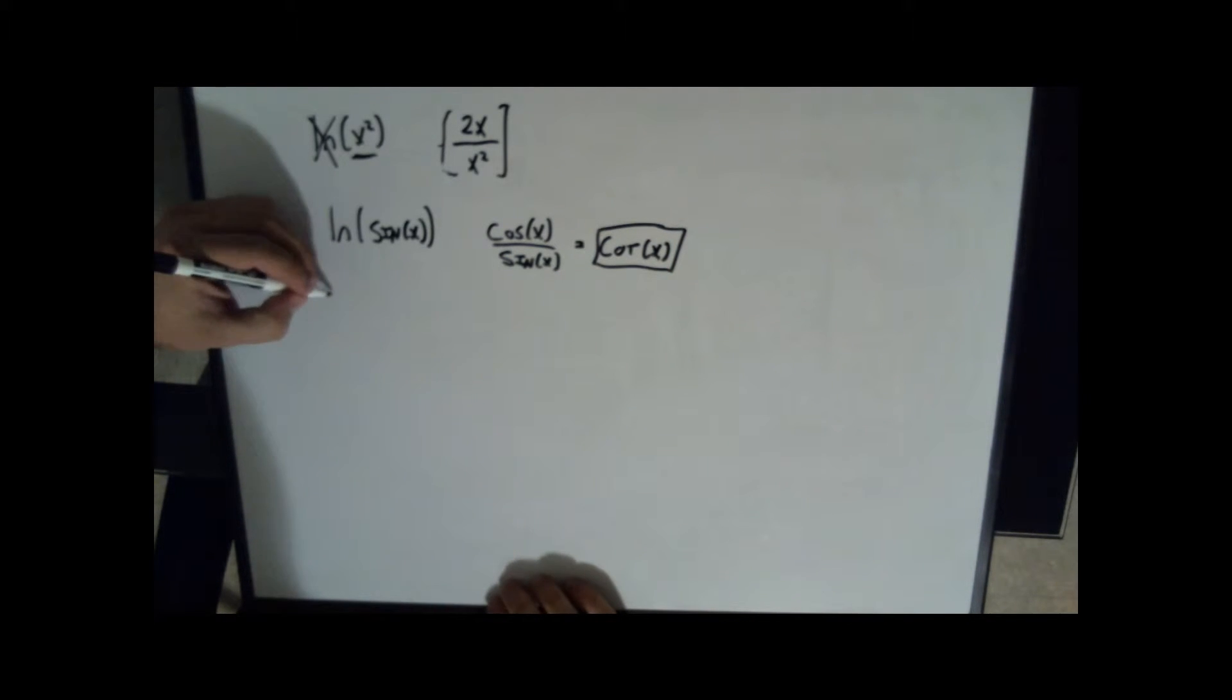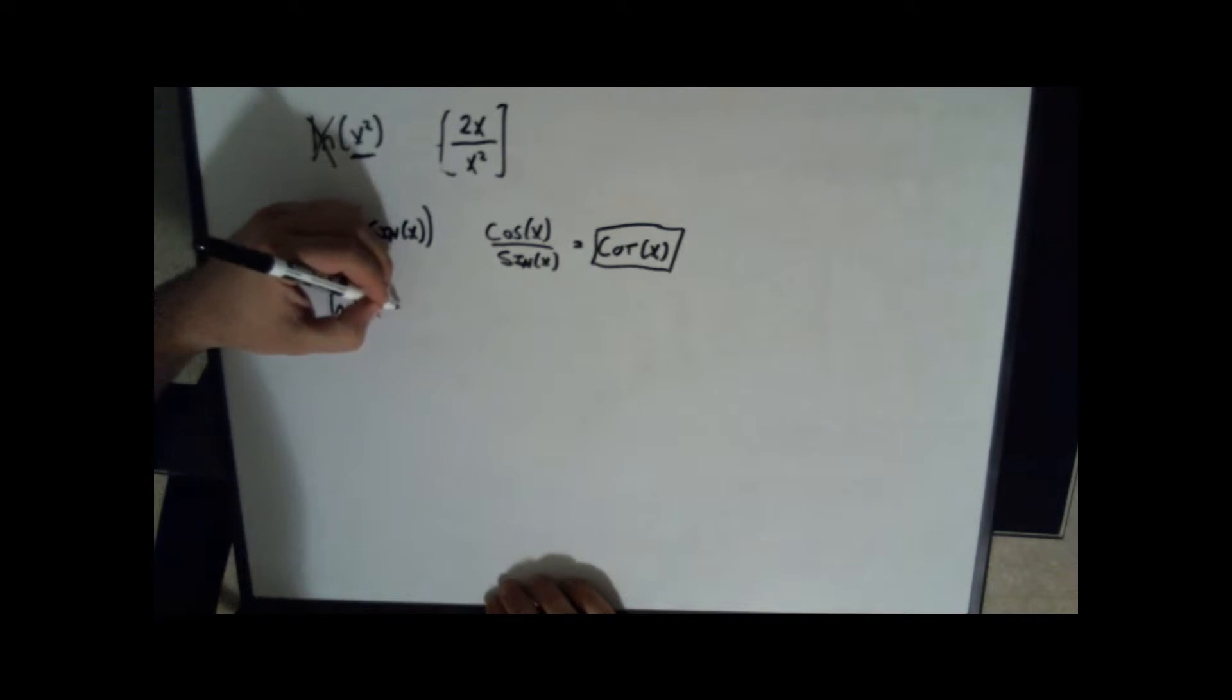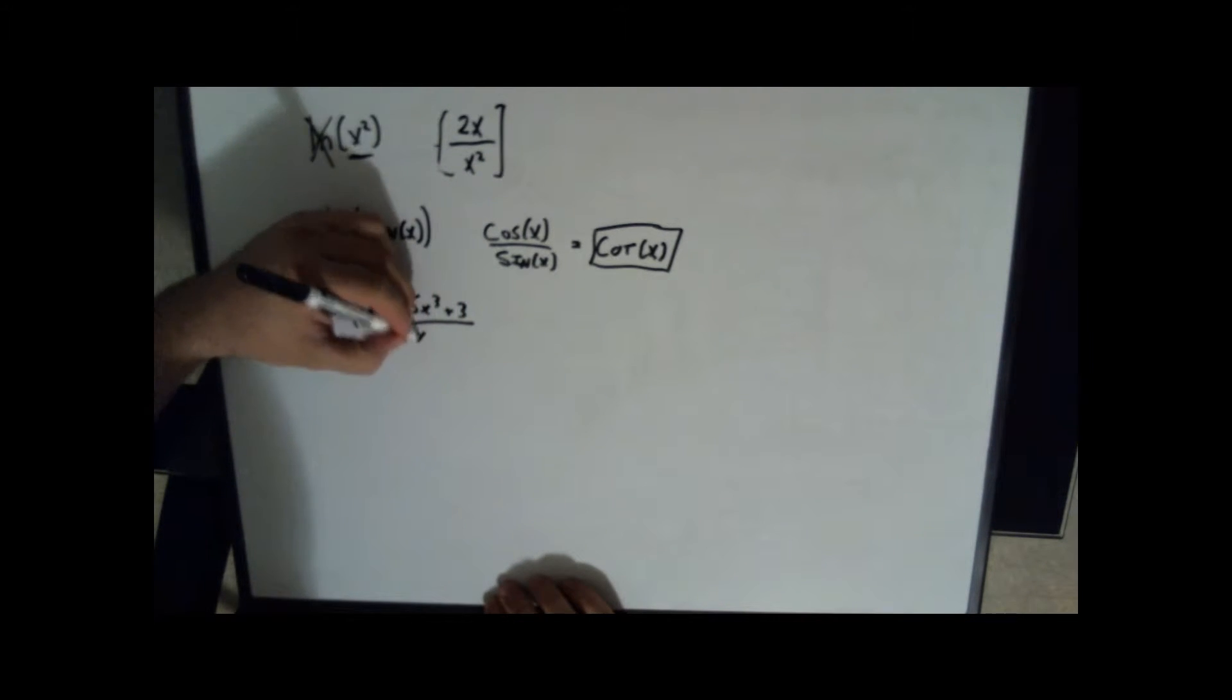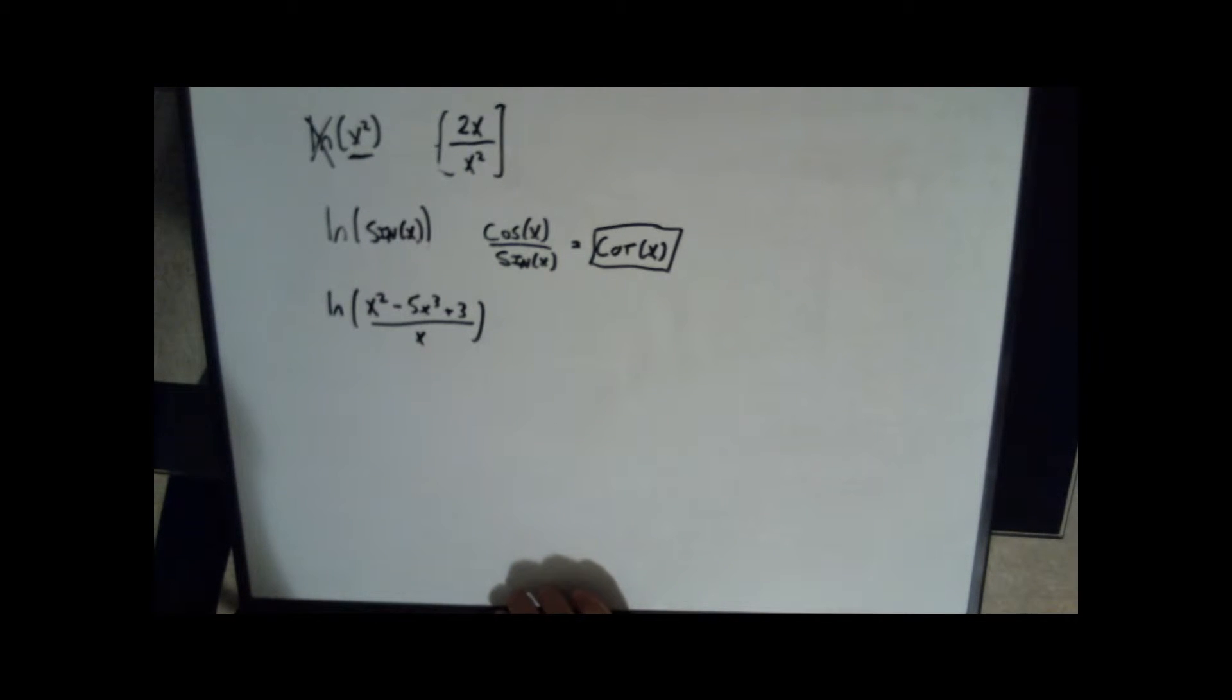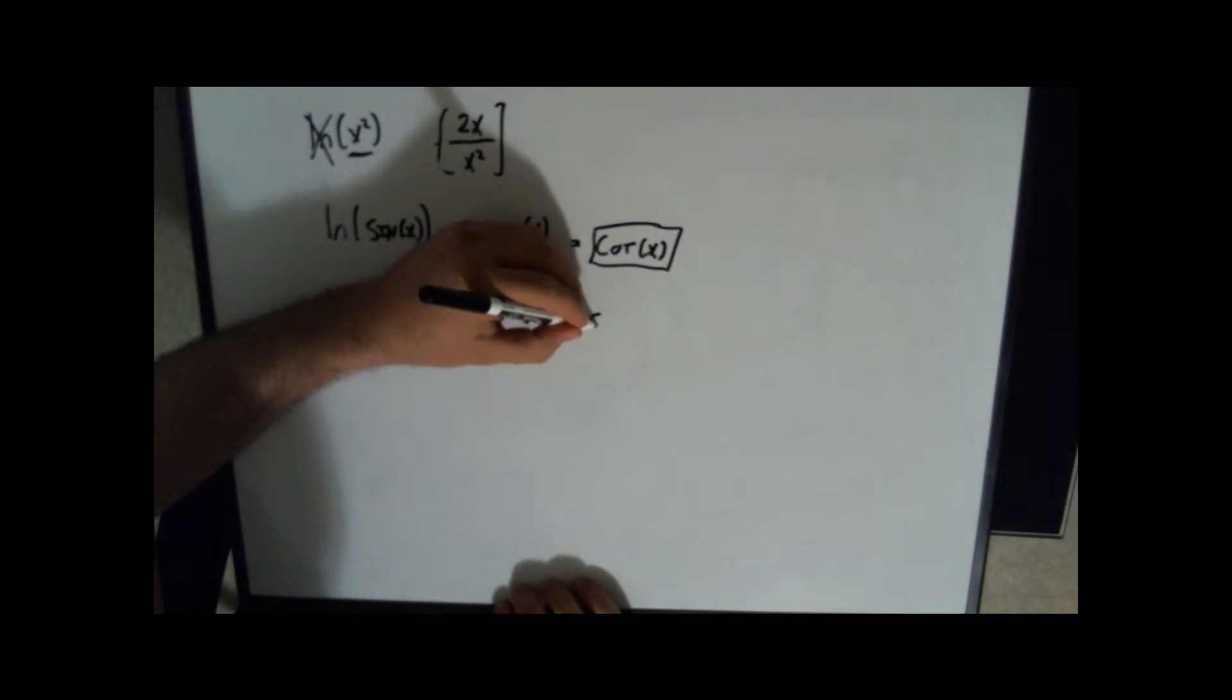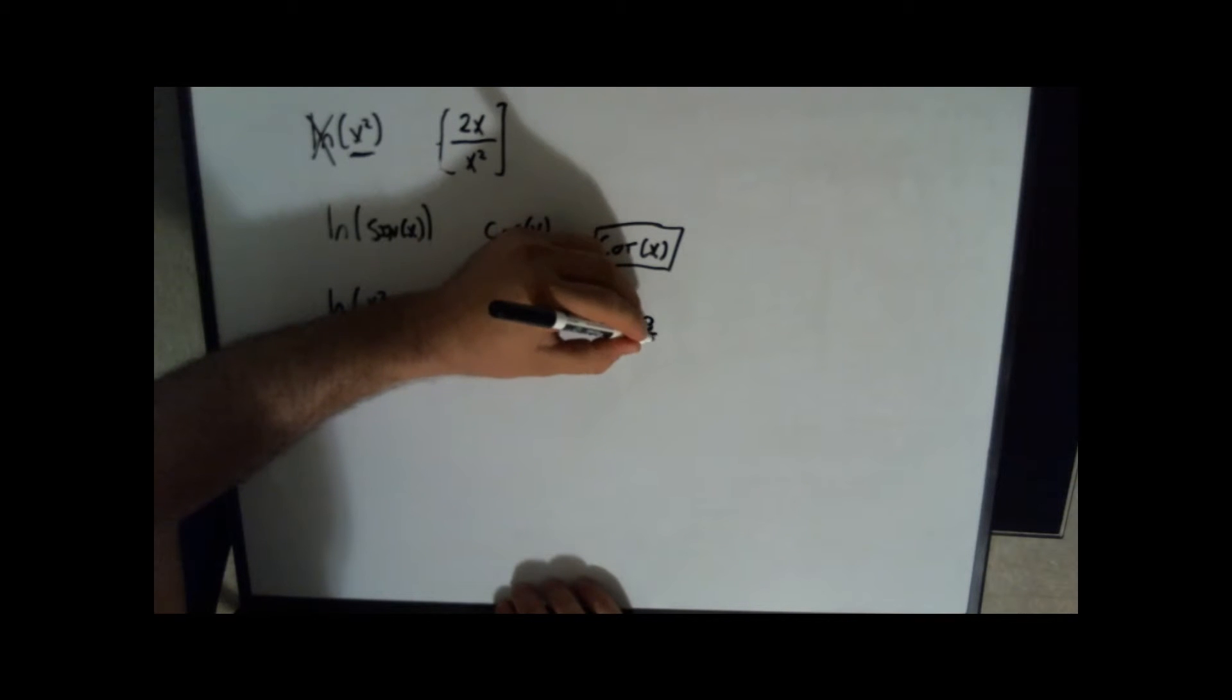How about natural log of x squared minus 5x cubed plus 3 divided by x. Well, that's easy enough. I will simply say natural log of x minus 5x squared plus 3 over x.